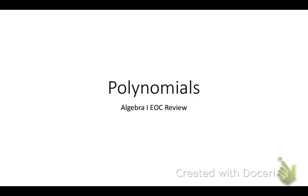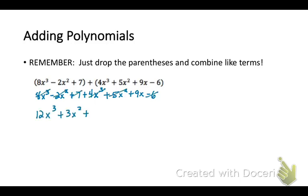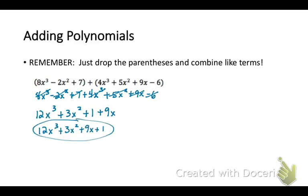We are reviewing polynomials. When adding polynomials, remember you're just going to drop the parentheses and combine like terms. Rewrite your first expression plus your second expression without the parentheses, then combine your like terms. Notice as I'm combining, I am crossing out what I am putting together. You can only combine terms that have the same variable exponent term. At the end, rewrite in standard form with the biggest exponent term first and the smaller ones following after it.